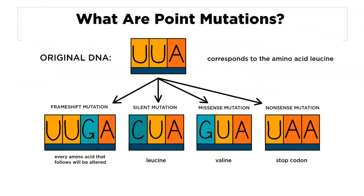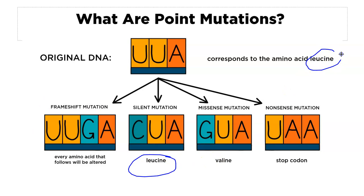Here's a picture showing the different types of point mutations. Here's your original DNA corresponding to amino acid leucine. The ribosome reads these three letters at a time and builds an amino acid sequence through translation. A frameshift mutation inserts a letter that can lead to disastrous results. A silent mutation still codes for leucine — you can see the amino acid doesn't change. Valine is a missense mutation that possibly could have a big change, possibly not. And a stop codon would of course lead to dramatic changes — nonsense would be very detrimental.